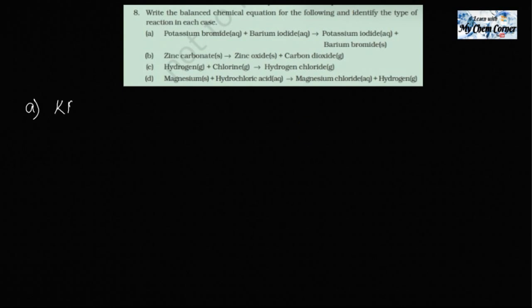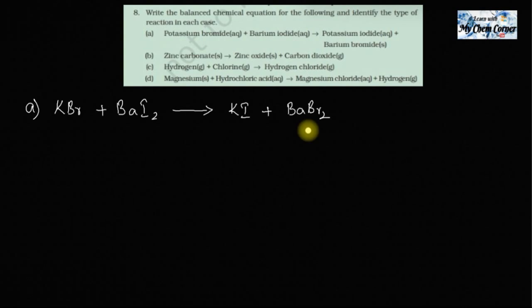The first reaction given is potassium bromide (KBr) plus barium iodide (BaI₂) giving potassium iodide (KI) plus barium bromide. The states are given: potassium bromide is aqueous, barium iodide aqueous, potassium iodide aqueous, and barium bromide is solid — it's a precipitate.